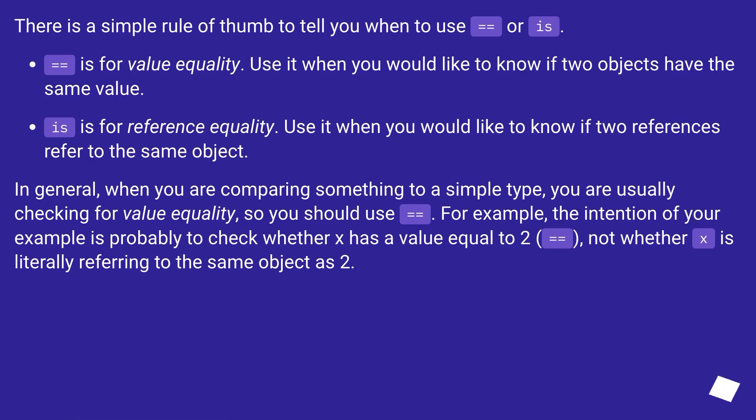There is a simple rule of thumb to tell you when to use equals equals or is. Equals equals is for value equality. Use it when you would like to know if two objects have the same value. Is is for reference equality. Use it when you would like to know if two references refer to the same object.